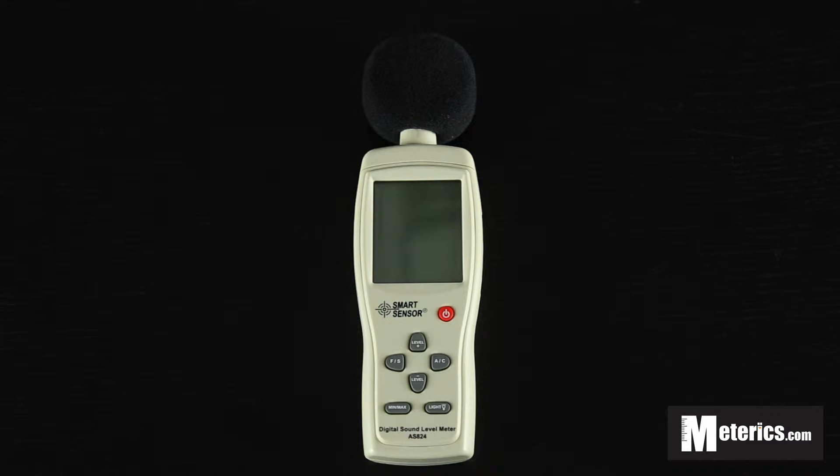So this is a Type 2 digital sound level meter, meaning that it has both A and C weighting frequencies on it. It is a pretty easy and standard meter to use.